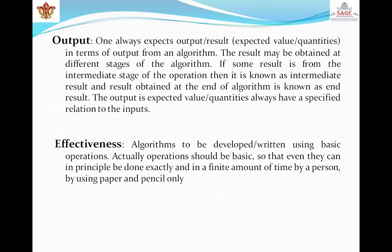Next is output. The algorithm must specify the output and how it is related to the input. One always expects output or result in terms of output from an algorithm. The result may be obtained at different stages of the algorithm. If some result is from the intermediate stage of the operation, then it is known as intermediate result, and result obtained at the end of algorithm is known as end result. The output is expected value or quantities that always have a specified relation to the inputs.